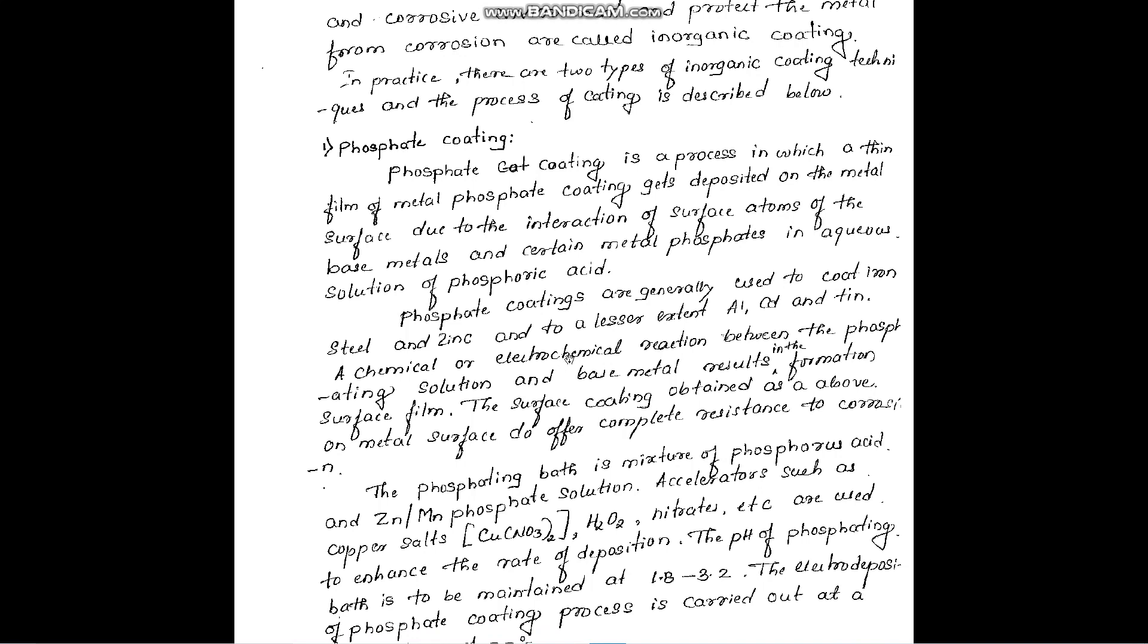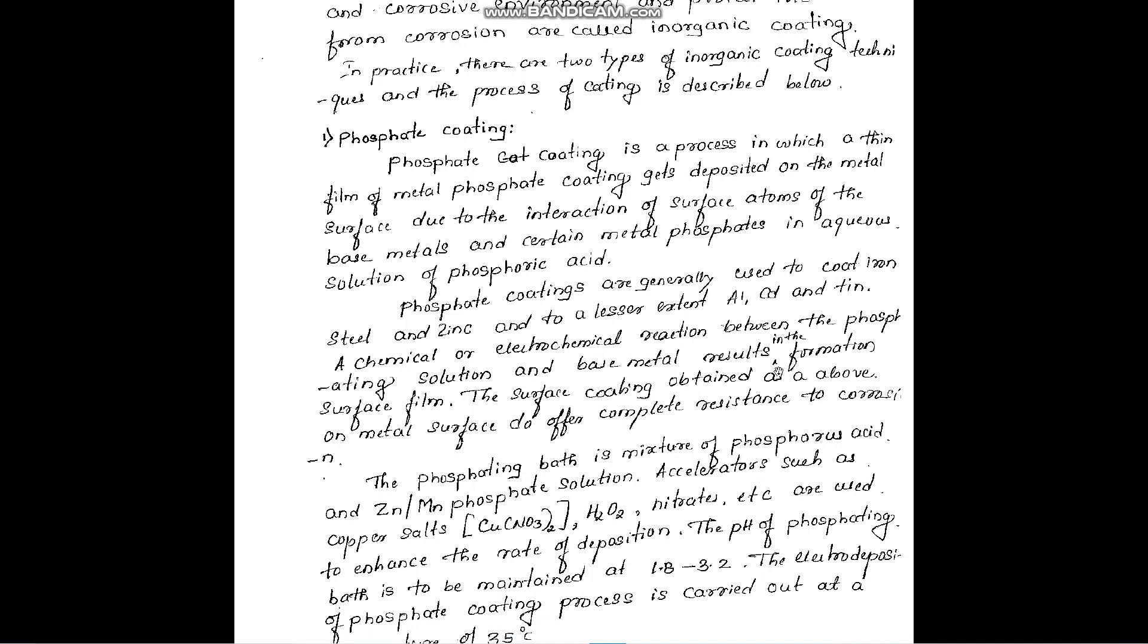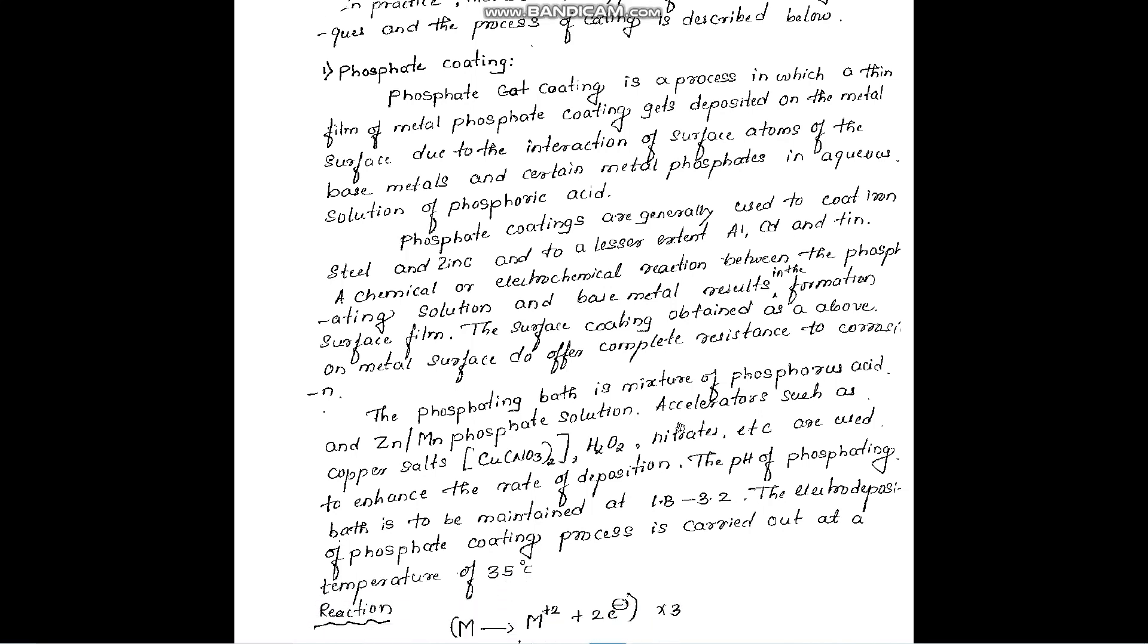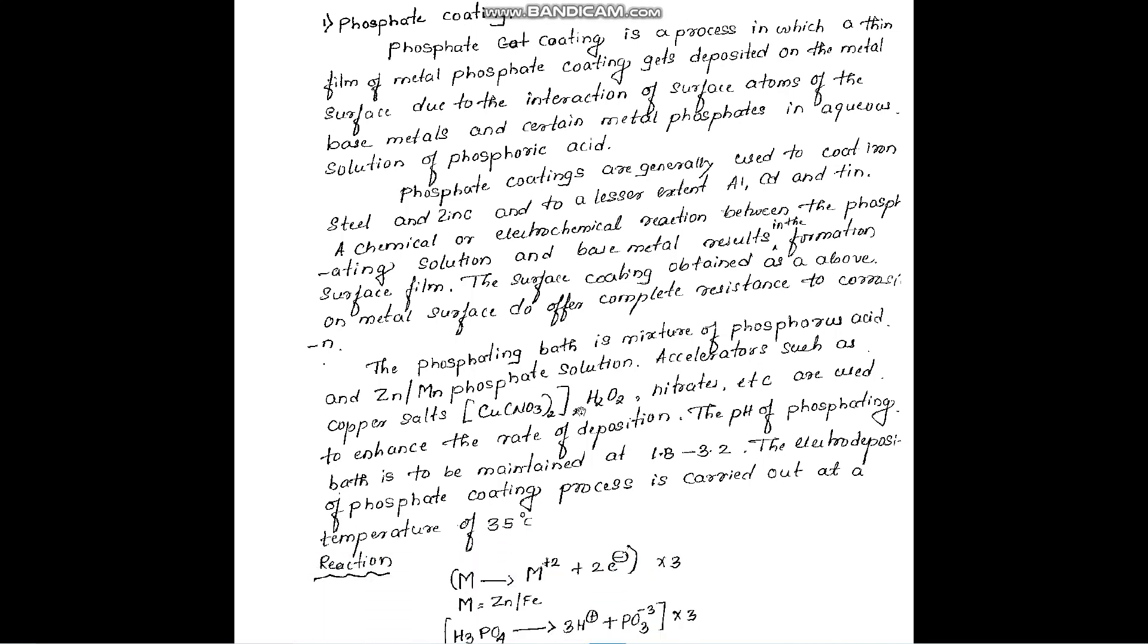A chemical or electrochemical reaction between the phosphate solution and base metal results in the formation of a surface film. The surface coating is obtained on the metal surface to offer complete resistance to corrosion.